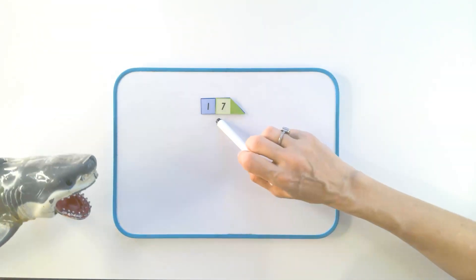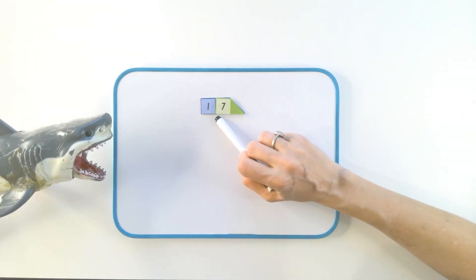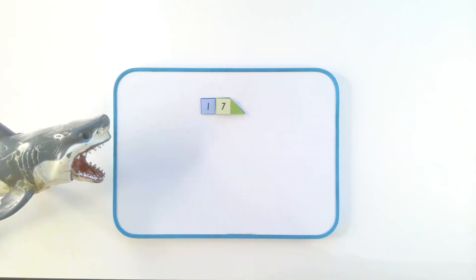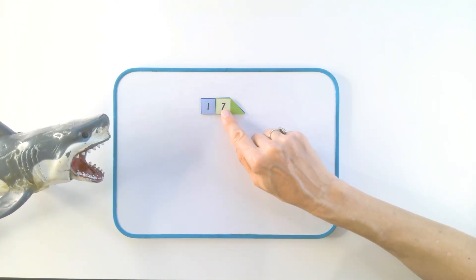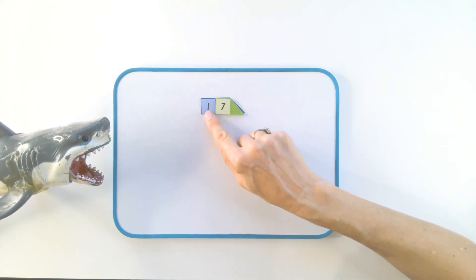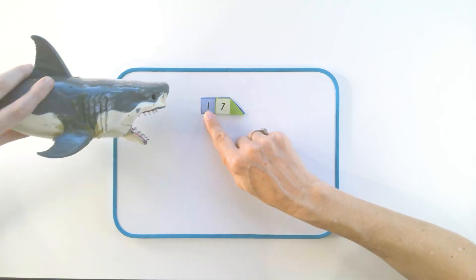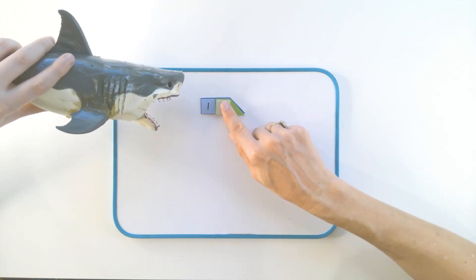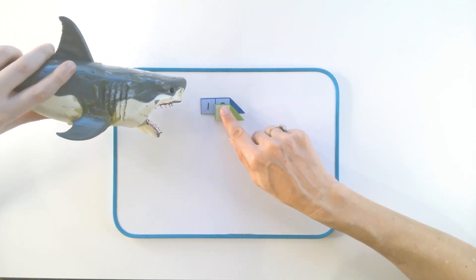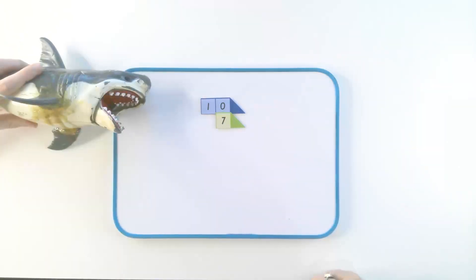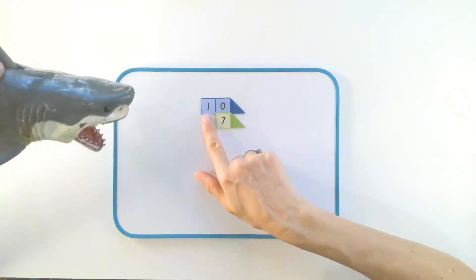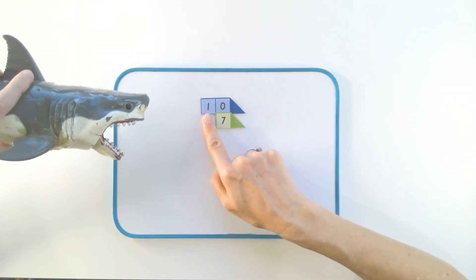But let's try one more. This is the number 17. Now, this is worth seven, but this digit here is actually worth, you ready for the surprise? Oh, you fainted. Yeah, okay. That little one is actually worth ten.